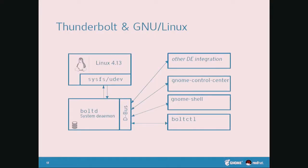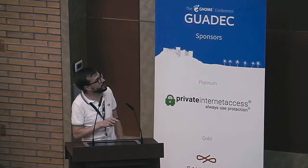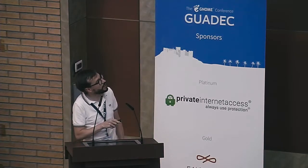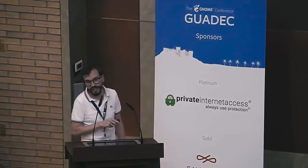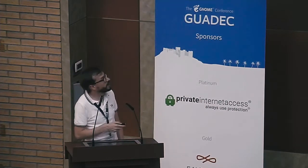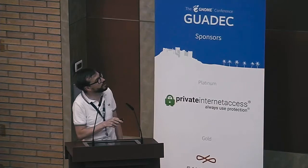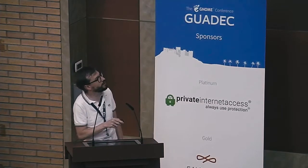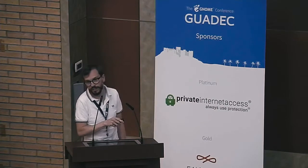To enable these security modes, we have a small system daemon called Bolt that talks to the kernel and observes via udev events that there are new devices. The daemon itself doesn't do anything but provides the devices on D-Bus, and then GNOME Control Center, GNOME Shell, or the command line can actually react to this and authorize devices.